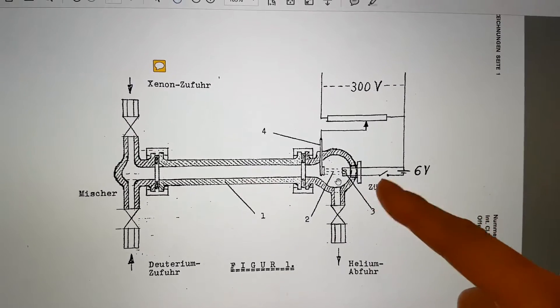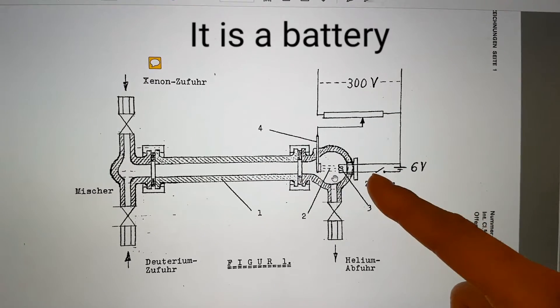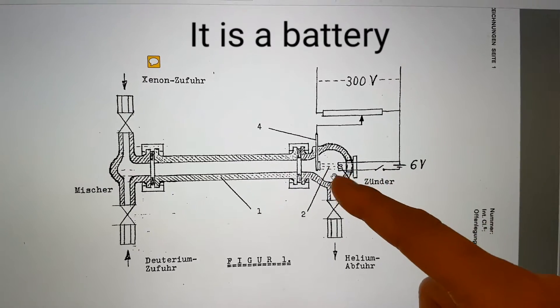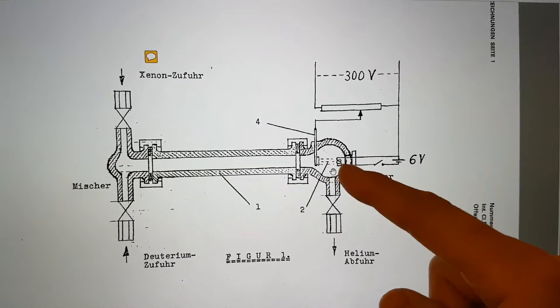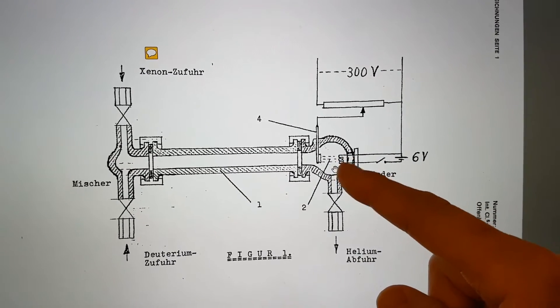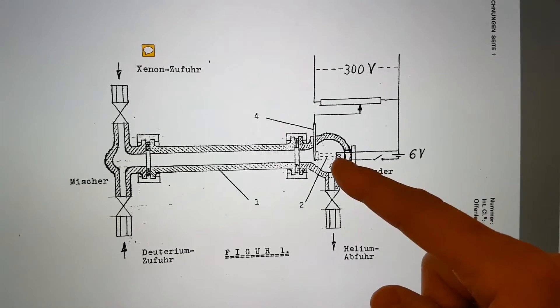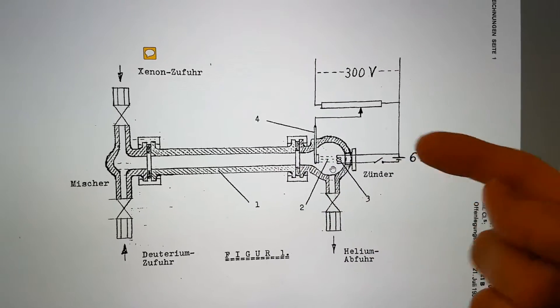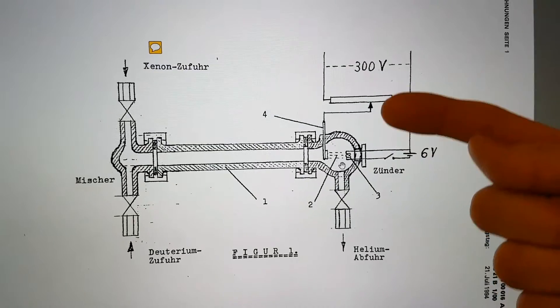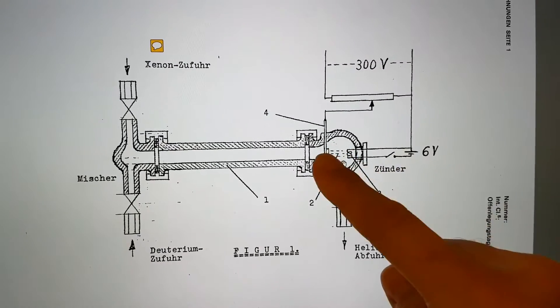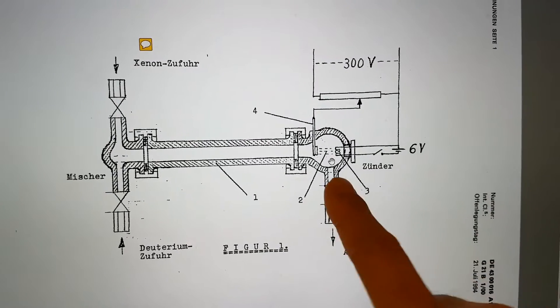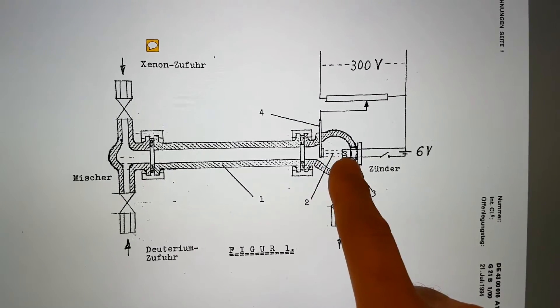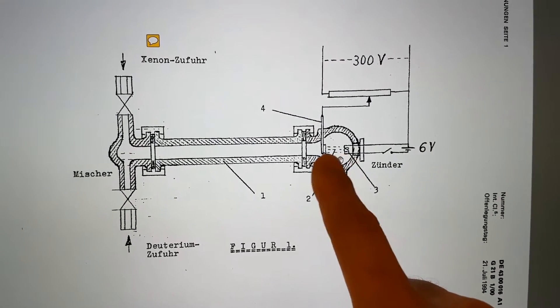You have some sort of capacitor with a switch here, so it's charging up. It's discharging through potentially some sort of filament here, which might create electrons through thermionic emission. Then you've got some sort of electric field between here and here up to 300 volts. And this will accelerate the electrons.